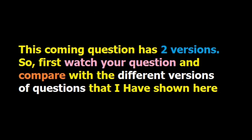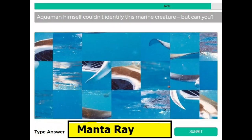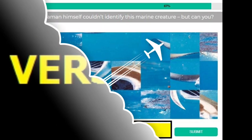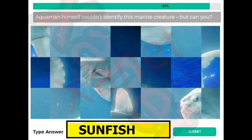The coming question also has two versions, so please watch the image very carefully as the images are different in both versions. In version 1, if you find this sort of image, your answer is manta ray. Similarly, for version 2, if you find this sort of image, your answer is sunfish.